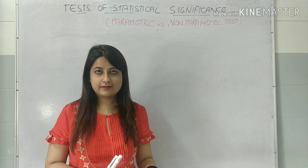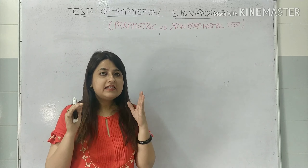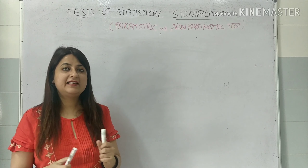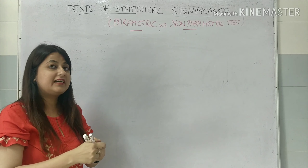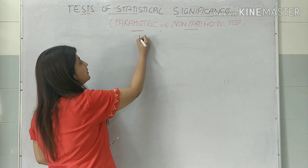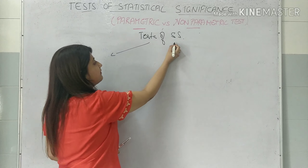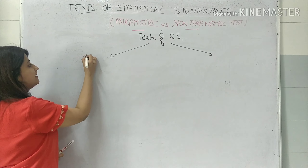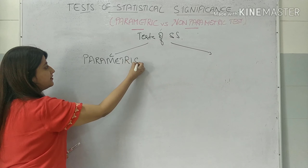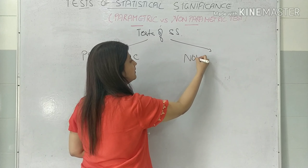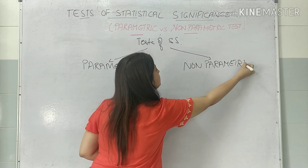Now there are a lot of statistical tests, but for your MCQs and exams, what is needed is that these statistical tests are divided into two main types. They are parametric and non-parametric tests. So let us understand the difference between the two. The test of statistical significance is divided into two: one is the parametric test and the other is the non-parametric test.